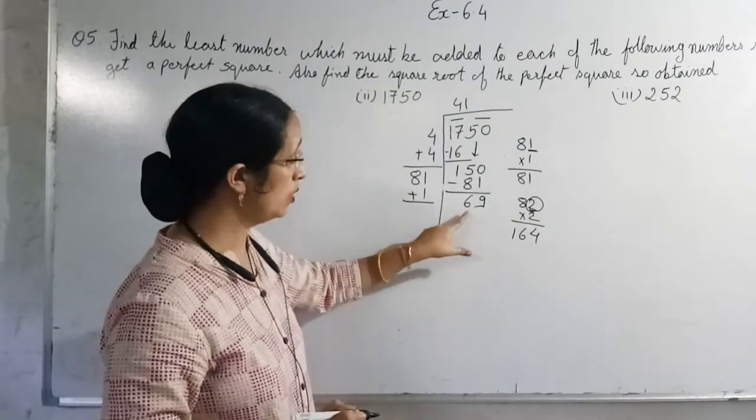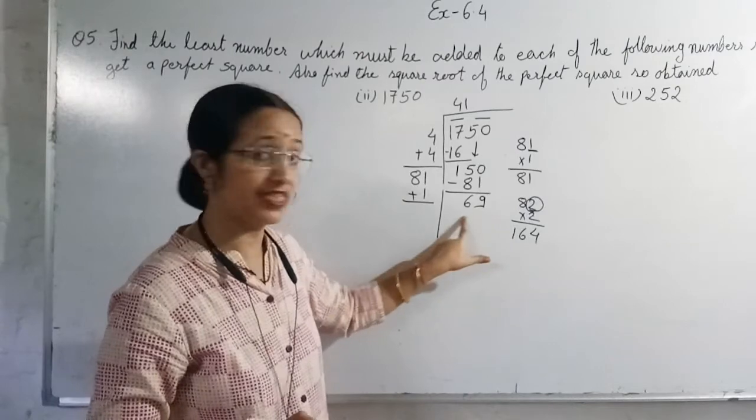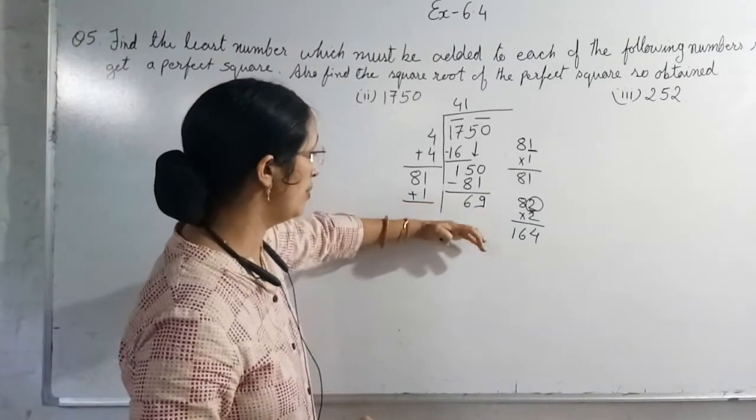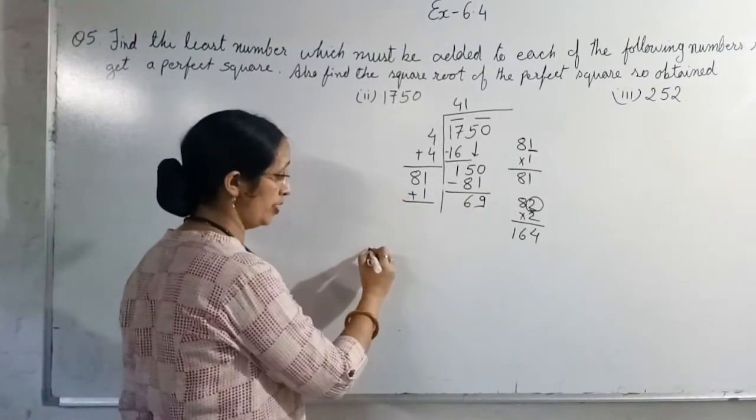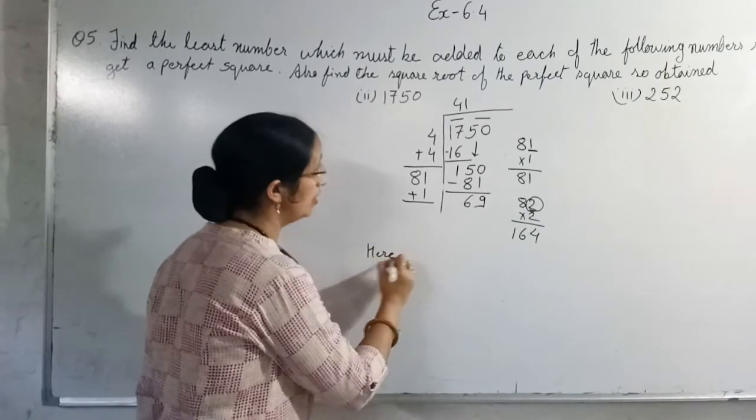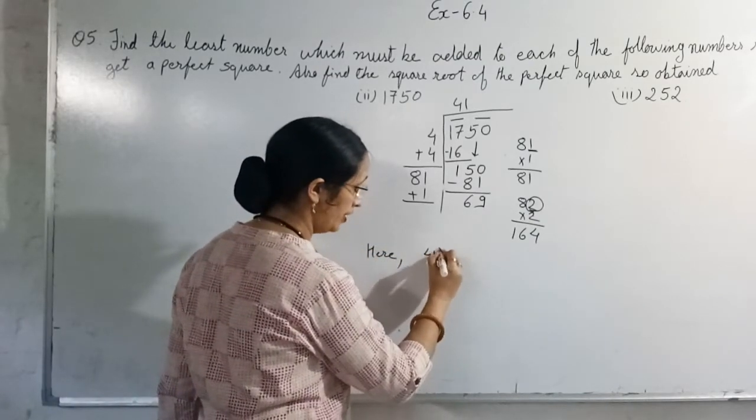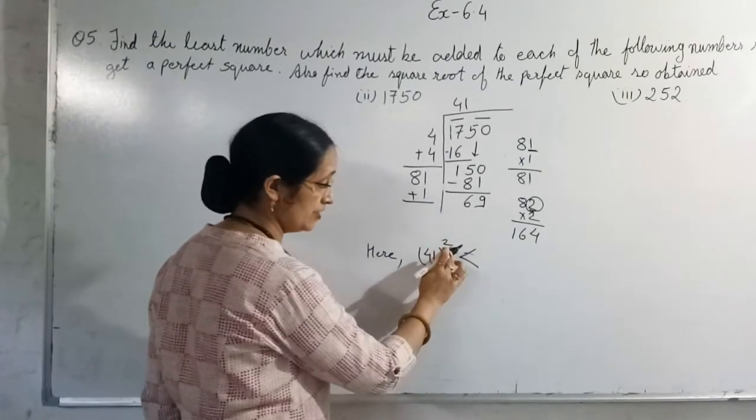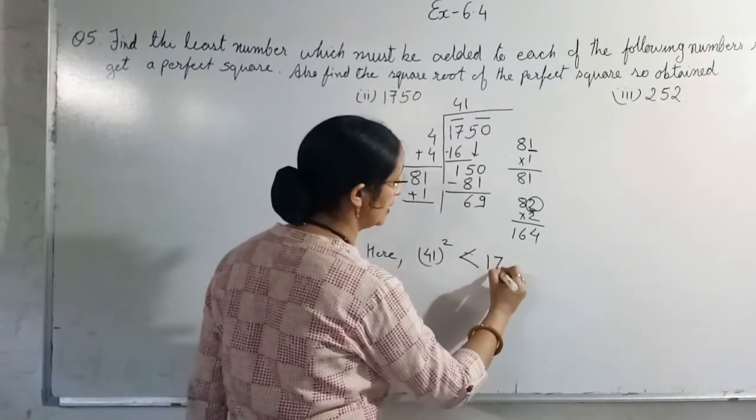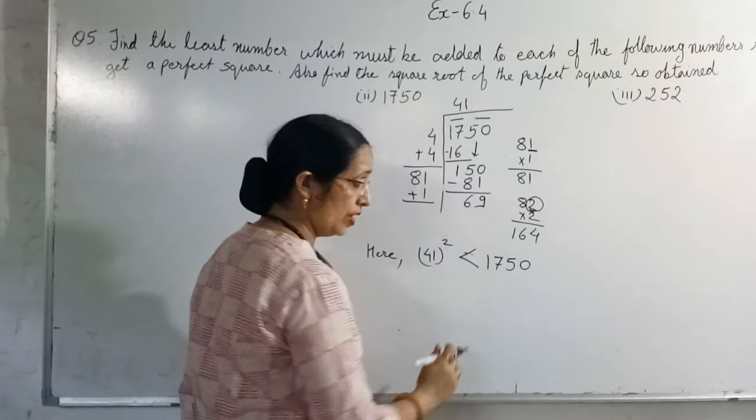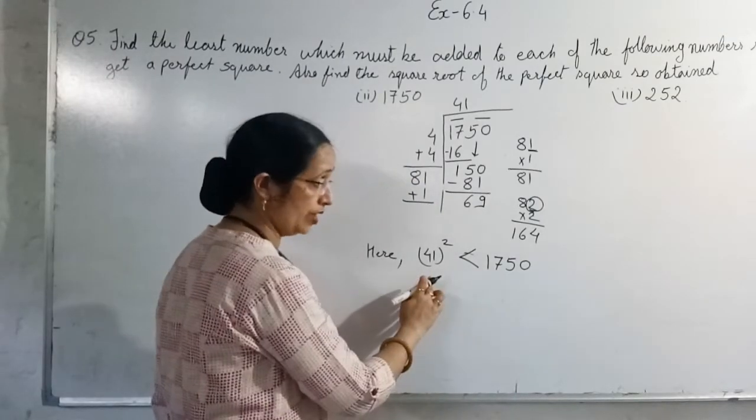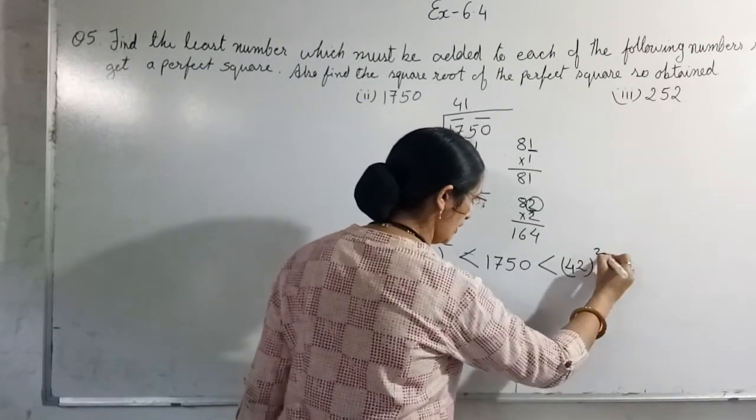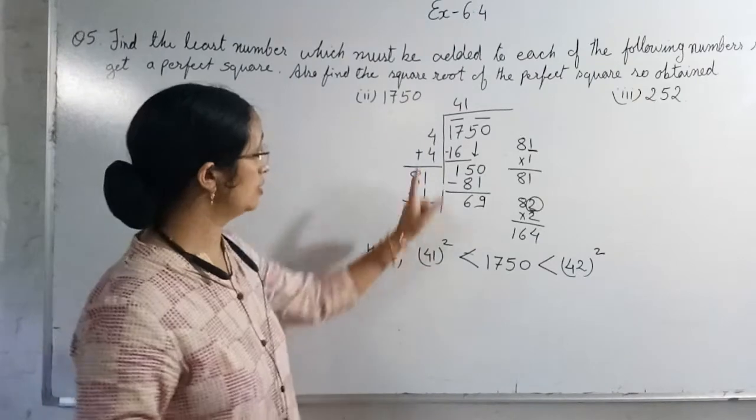This is the remainder. This proves that 1750 is not a perfect square. Now question is what should be added? We conclude here: 41 ka square se bada hai, which number is bigger than that? 1750 is bigger than 41 square and it will be smaller than 42 square.